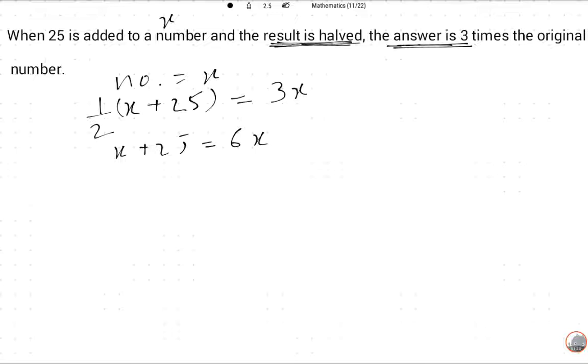So x will move there. 25 equals 6x minus x, so 5x is equal to 25. We can write this. Now x is equal to 25 upon 5.